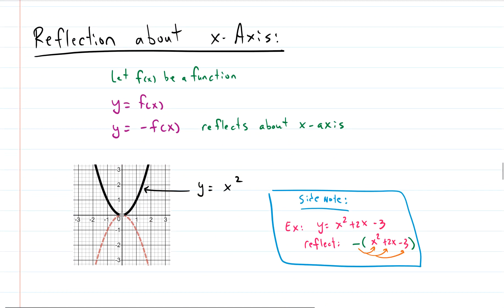Let's talk about reflection about the x-axis. If your function is F — here our function is y equals x squared — we can rotate that about the x-axis, or flip it down below the x-axis, simply by multiplying by a negative. So our new function would be y equals negative(x squared), which simplifies to negative x squared. A note though: if your function isn't just x squared — say it's x squared plus 2x minus 3 — and you're multiplying by a negative, you've got to distribute that negative to each of the terms of the function.